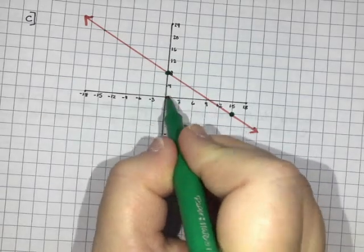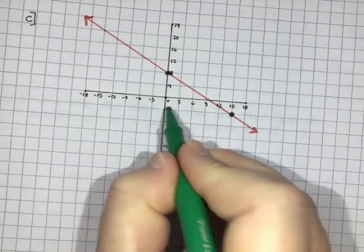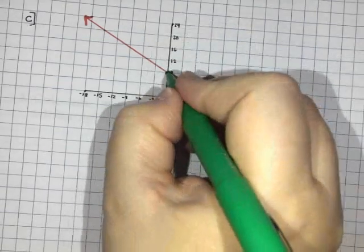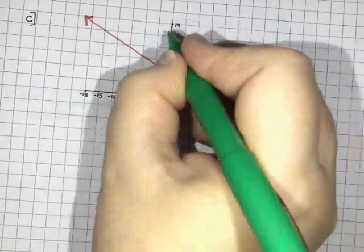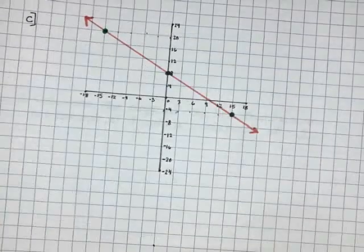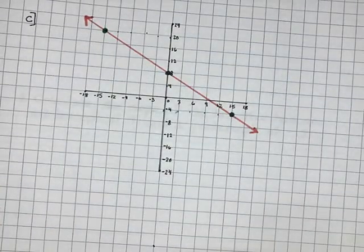How far did we go? We went 1, 2, 3 squares and then 1, 2, 3, 4, 5 squares. So I'm going to go 1, 2, 3, 1, 2, 3, 4, 5. That definitely puts me on the line so I feel good about that.